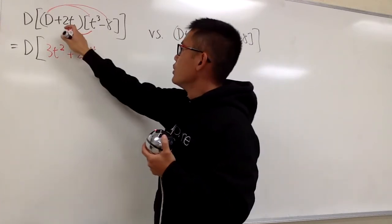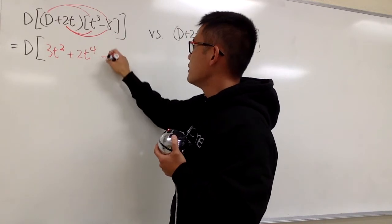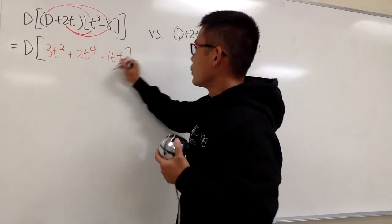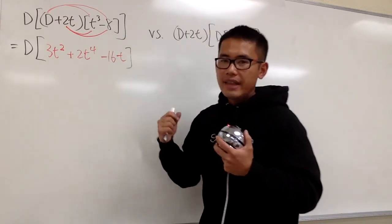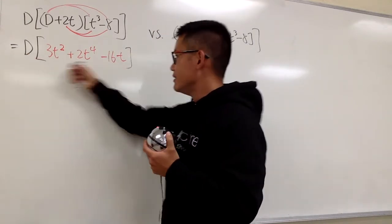At the end, you do 2T times negative 8, which is negative 16T. This is what we have. Now we're going to differentiate this.